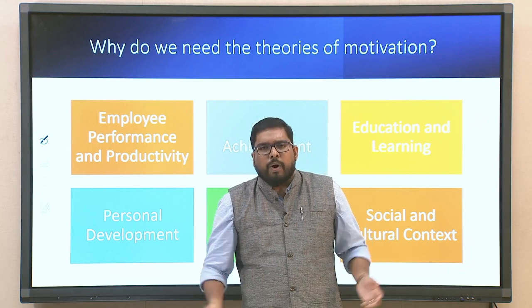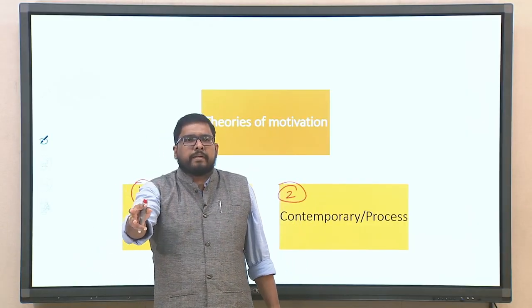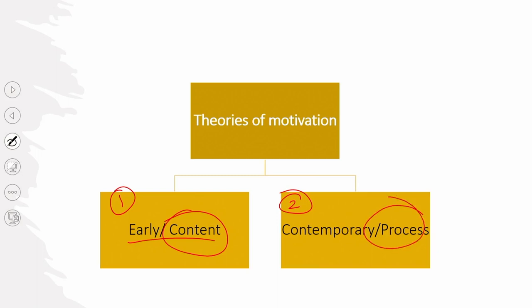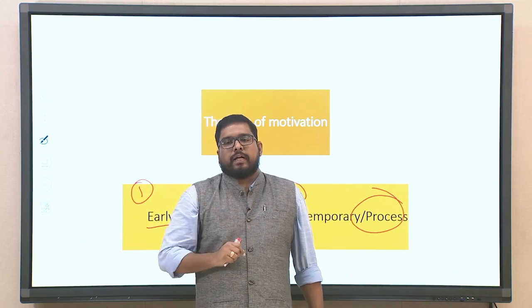These are some of the requirements or the need for theories of motivation. We can classify them into two: early or content theories, and contemporary or process theories. Content theories are more static in nature — they look into the needs, requirements, and aspirations of individuals within an organization. Process or contemporary theories are more dynamic, addressing things that keep changing, updating, and improvising.